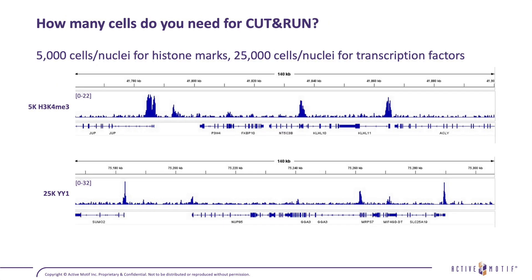How many cells do you need for CUT&RUN? It depends on how abundant your mark is. 5,000 cells is appropriate for very abundant marks like H3K4 trimethyl. For transcription factors such as YY1, as few as 25,000 cells are necessary. More cells won't damage the assay — you can use up to 500,000 cells per sample, and going higher in cell number won't harm your results.